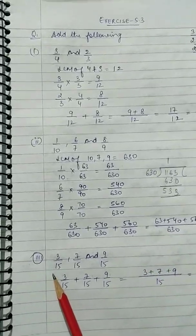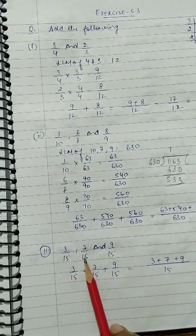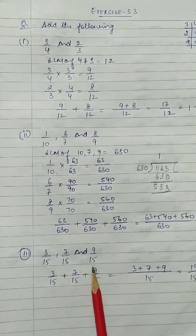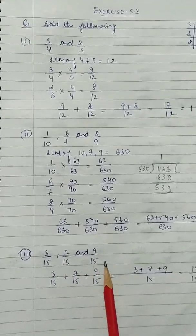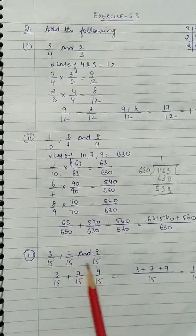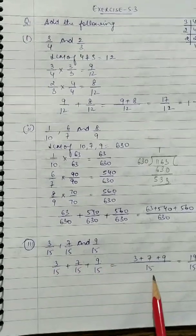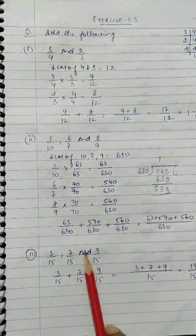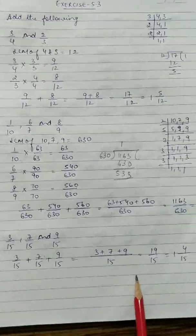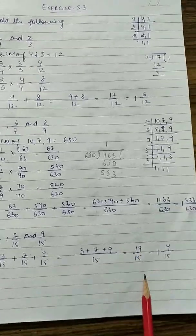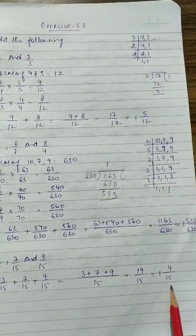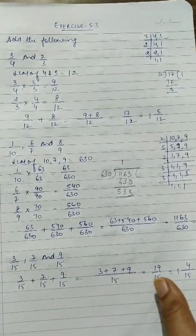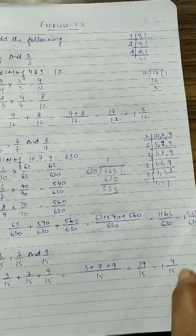Next is easy: 3/15, 7/15, and 9/15, because these are like fractions, so no need to take the LCM. Directly write 15 as the denominator and 3 + 7 + 9 in the numerator. You will get 19/15, which as a mixed fraction is 1 and 4/15.